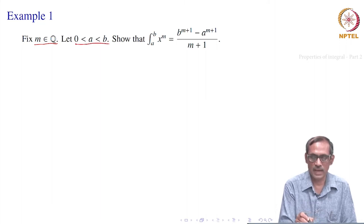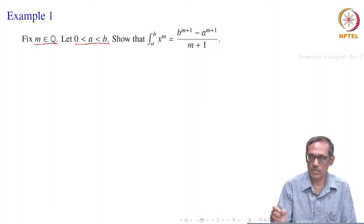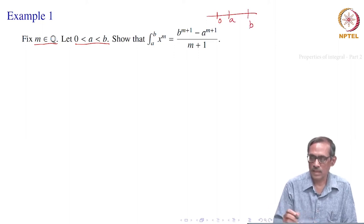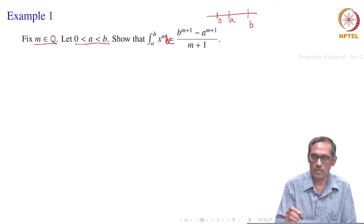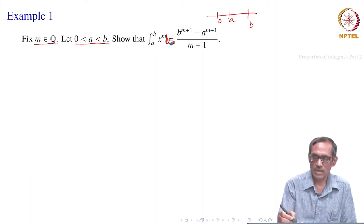Suppose 0 is less than a less than b. That means you have the interval with a and b somewhere on the number line. Then take the integral of x to the power m on the interval a to b. The power function x to the power m is defined on this interval where m is a rational number. The integral is ∫ₐᵇ x^m dx — the dx symbol was missing earlier.